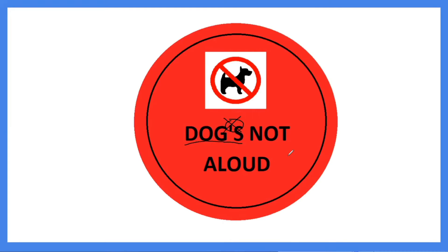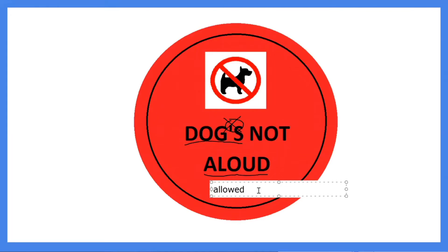Were you able to notice any other errors? The other error I made was with the word allowed. When spelled a-l-o-u-d, the word aloud means audibly or loudly. For this sign, we want to use the spelling allowed — a-l-l-o-w-e-d — because it expresses that dogs are not able to enter this door.